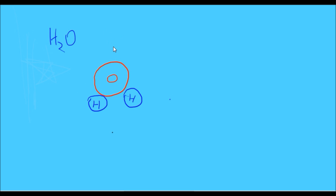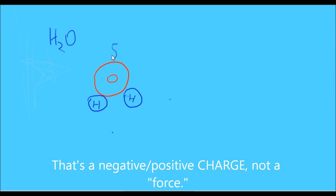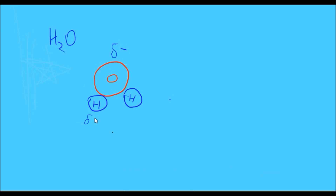As a result, oxygen has a very slight weak negative charge — we use the symbol delta negative to show that oxygen has a slight negative charge. And each hydrogen atom is going to have a very slight positive charge as a result. So oxygen is negative, and the hydrogens each have a positive charge.